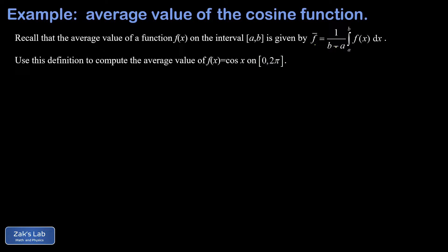That's one over b minus a times the integral from a to b of the function. The geometric interpretation of the average value is that it's the constant function that encloses the same amount of area as the original function on that interval.